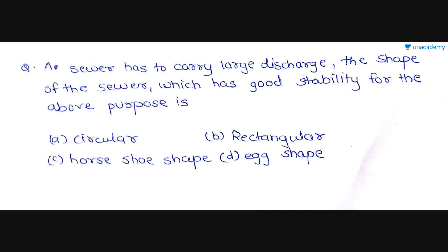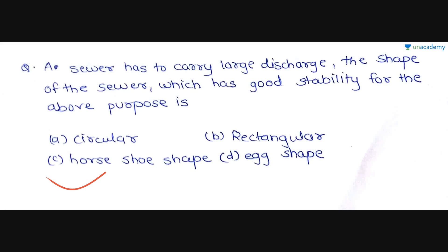The next question is: a sewer has to carry large discharge — the shape of sewer which has good stability for this purpose. The options are circular, rectangular, horseshoe shape, and egg shape. For carrying large discharge, the shape of sewer which has good stability is the horseshoe shape. Please do remember this point. Option C is the correct answer.